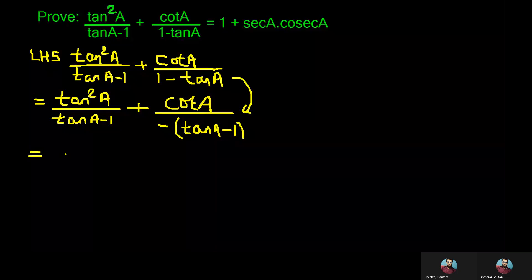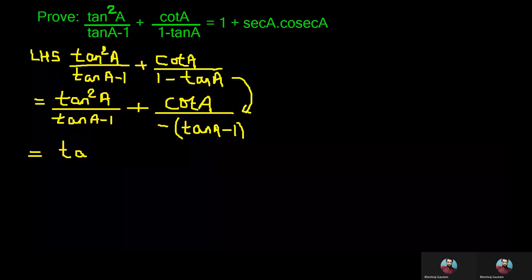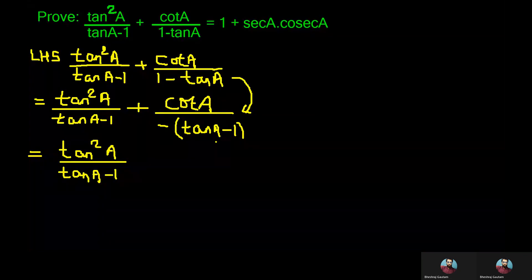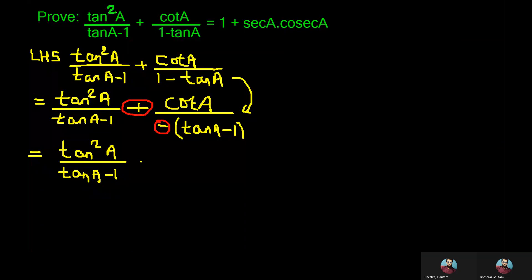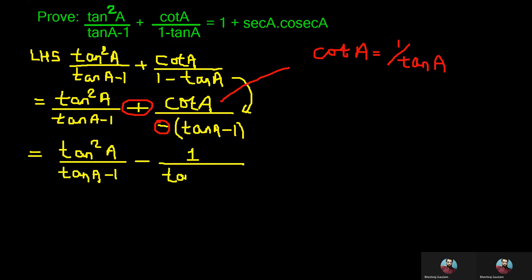In the next step, we copy the first fraction the same. In the second one, we make a sign change where the plus and minus get multiplied, and we write minus between the two fractions. Also, cot a can be written as 1 by tan a from the formula cot a = 1/tan a. So tan a goes to the denominator and gets multiplied with (tan a minus 1) that was already existing.